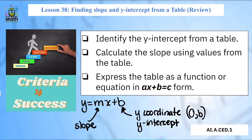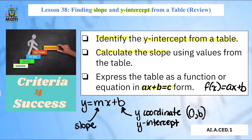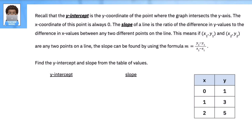And M is the slope — that measure of the steepness of a line we talked about in our last lesson. Those two parts of an equation are really important. In this lesson we're going to figure out how to find the slope and the y-intercept from a table. Our goals: to identify the x-intercept from the table, calculate the slope using values from the table, and express the table as an equation or function.